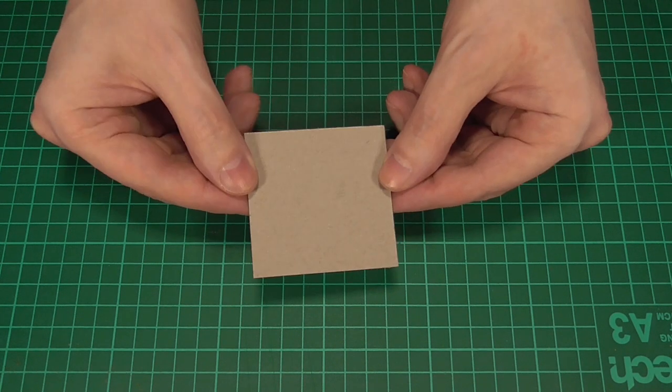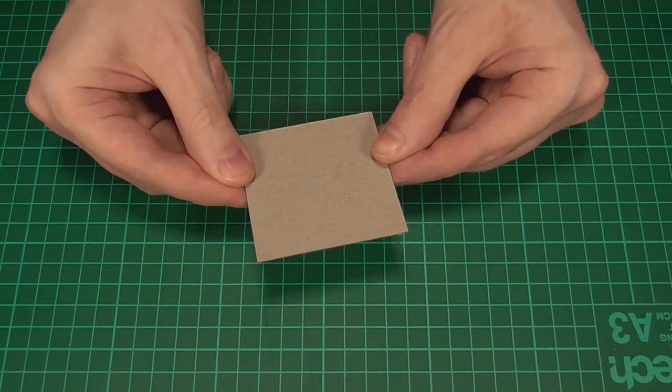So to begin with, we'll first take a piece of thick card, greyboard, chipboard, whatever you want to call it, and that needs to be two or three inches square.